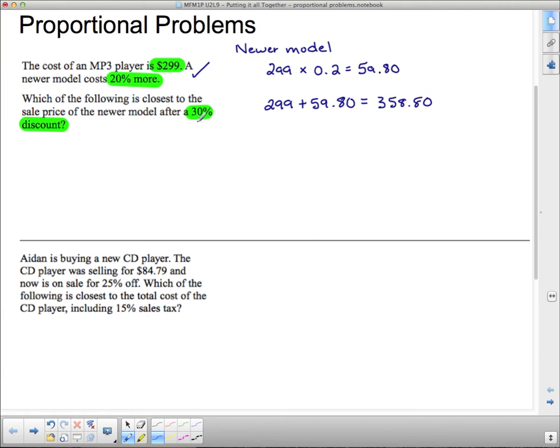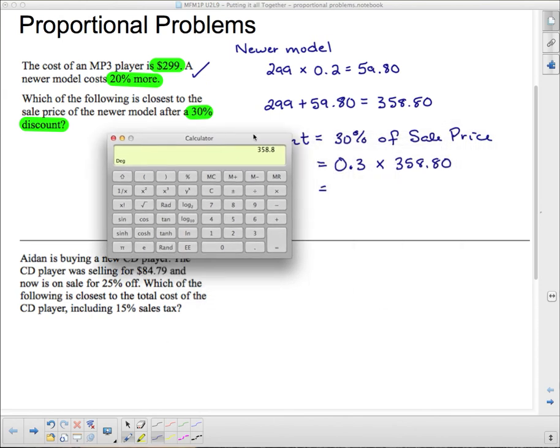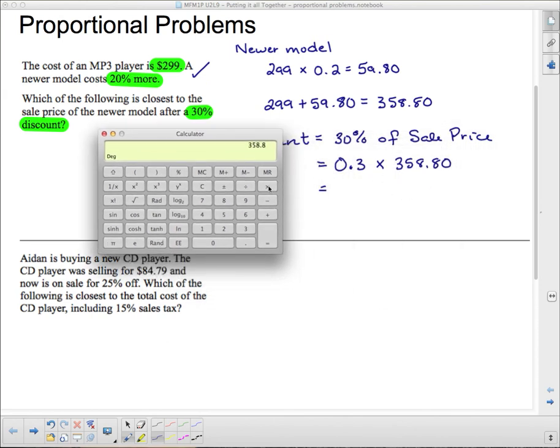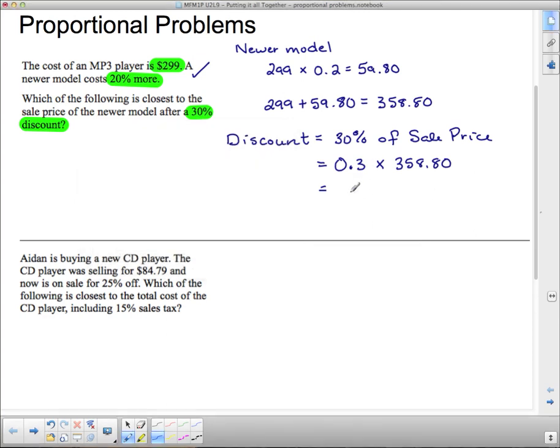Now it says what is the price after a 30% discount? So we need to find the discount. The discount is going to be 30% of the sale price. And this was the price of the newer model, so I need to do 30% of the sale price. And so we do 30% as a decimal, and 0.3 of means multiply. The sale price is $358.80. And now we take that, and we do 3. And look at that. I've still got it on my calculator, so I just need to go times 0.3. 107.64.